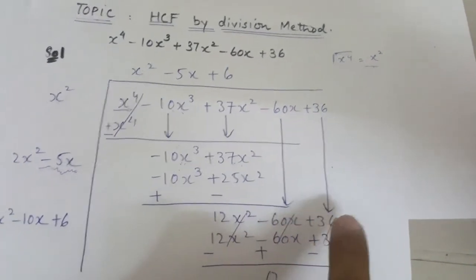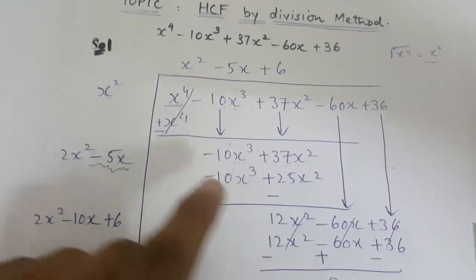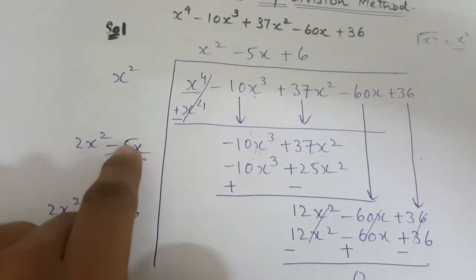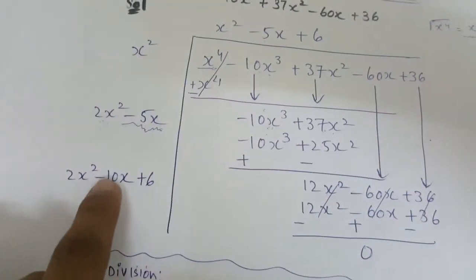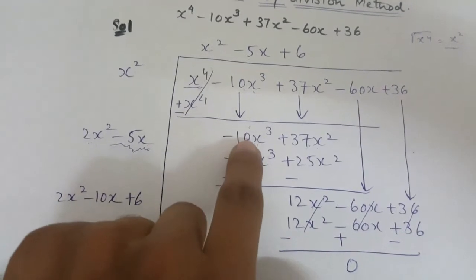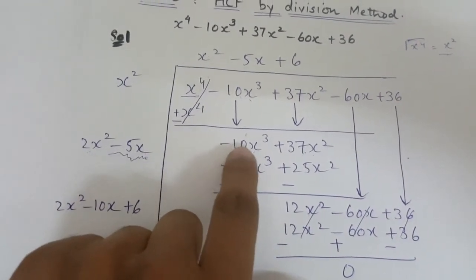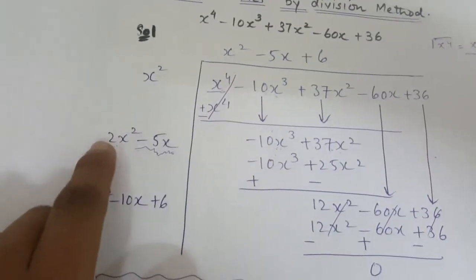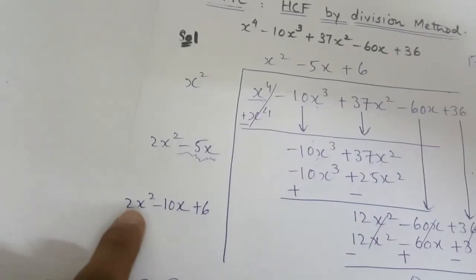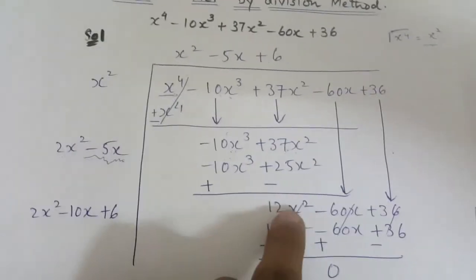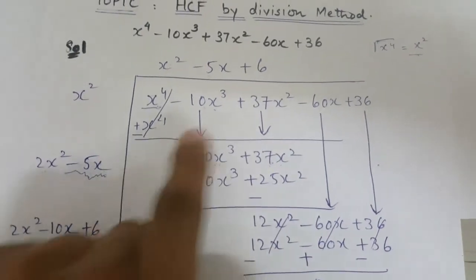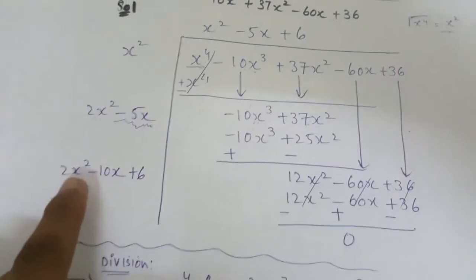We write 2x² as it is, and add -5x and -5x to get -10x, writing it here, and +6 follows the same pattern. Just as we divided -10x³ by 2x², in the very next step we divide 12x² by 2x², which gives us 6. We write 6 once here and once here.